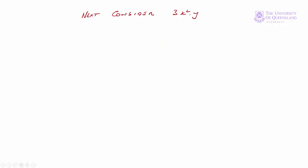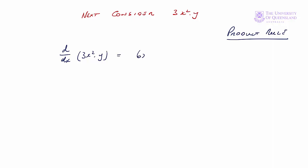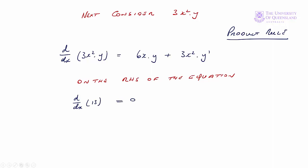Our next term is 3x²·y. Since this is a product, we use the product rule: d/dx of 3x²·y. Differentiating 3x² gives 6x, times y, plus 3x² times the derivative of y with respect to x, which is y′. So that term gives us 6xy + 3x²·y′. On the right-hand side we have d/dx of 13, which equals zero since 13 is a constant.